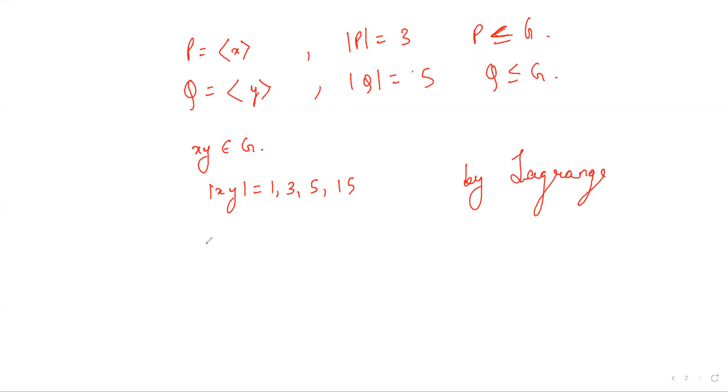Now note that the order of xy is not equal to 1, because if xy has order 1, xy will be the identity element which implies x equals y inverse. But this is not true since x has order 3 and y has order 5. So 1 is not the case.